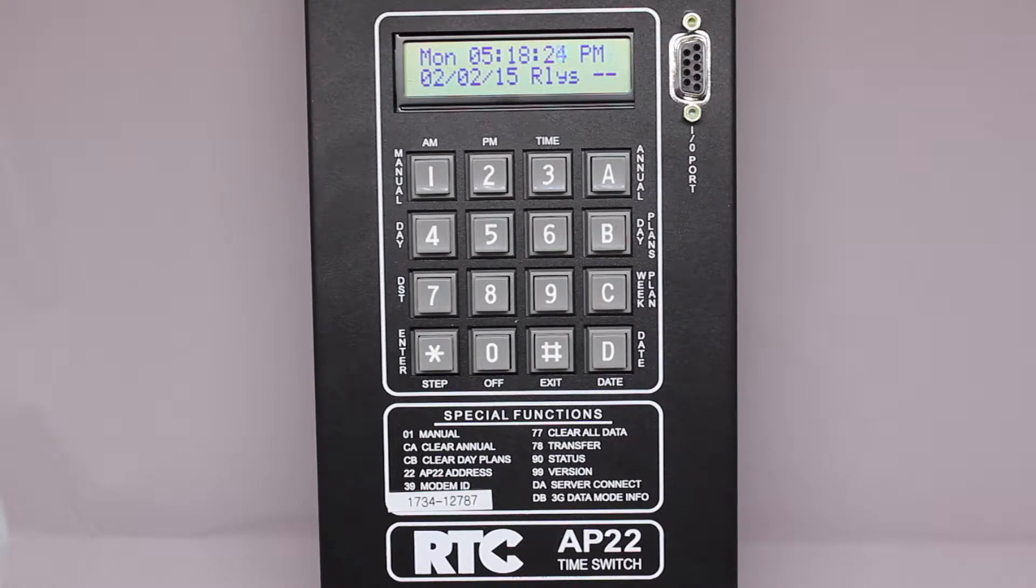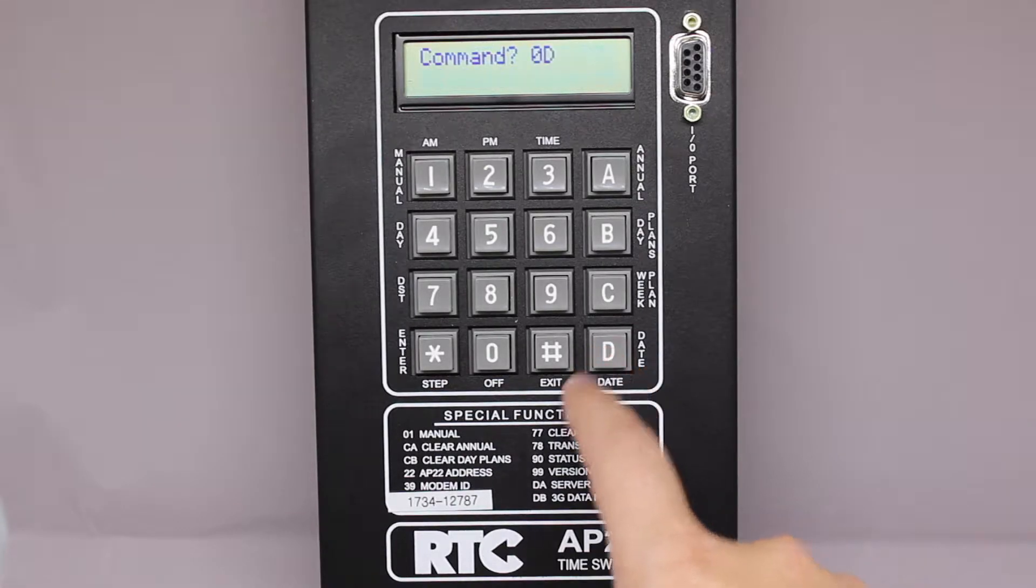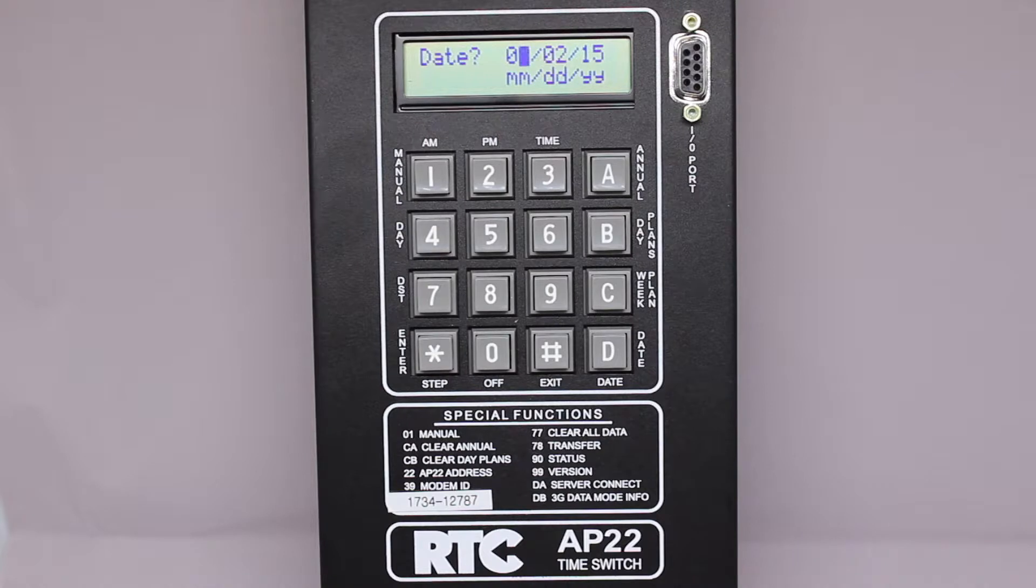so to make that change I am going to press the D key, which is marked for date, followed by the star key, which is marked enter. This brings me to the date screen where you will see a cursor highlighting the month.